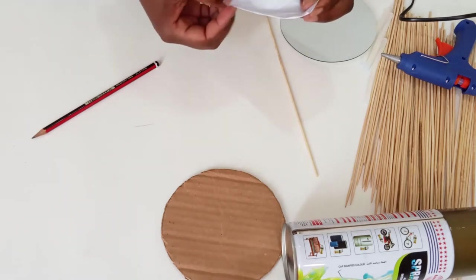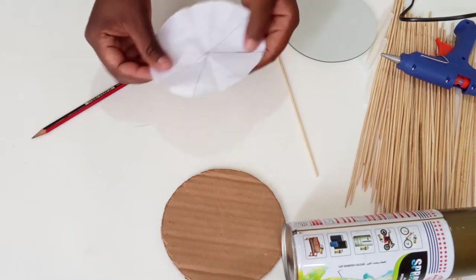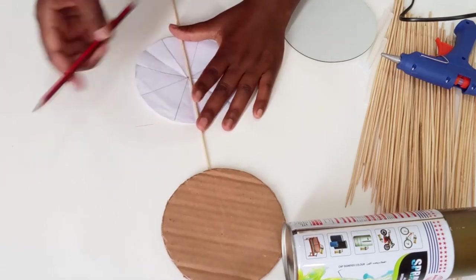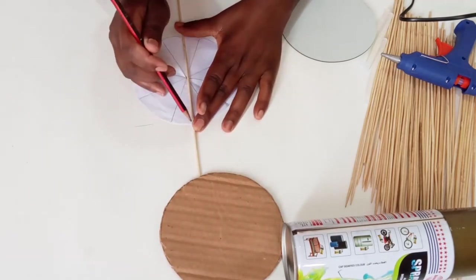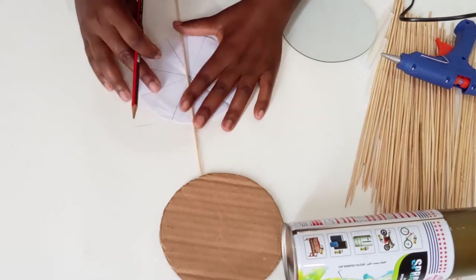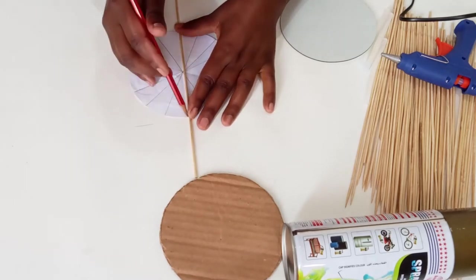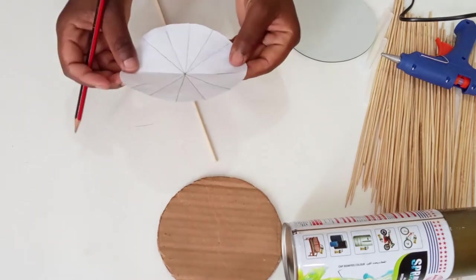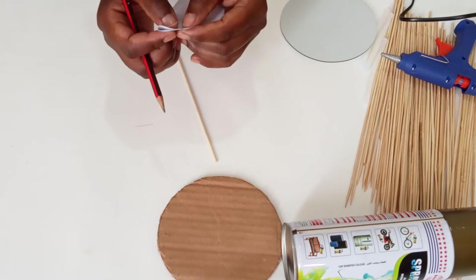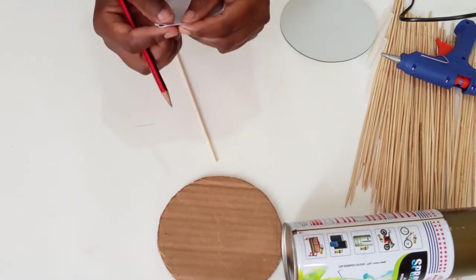A little back story: skewers are basically those sticks, or there are others that are made of metal, that are used for cooking mostly, specifically when cooking meat. I've seen those fancy dishes where they stick pieces of meat and then cook them. Anyway, it's used for cooking basically.